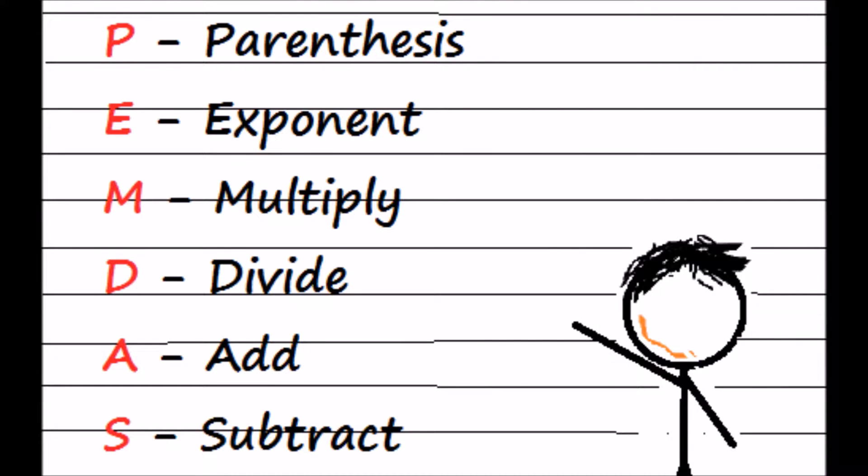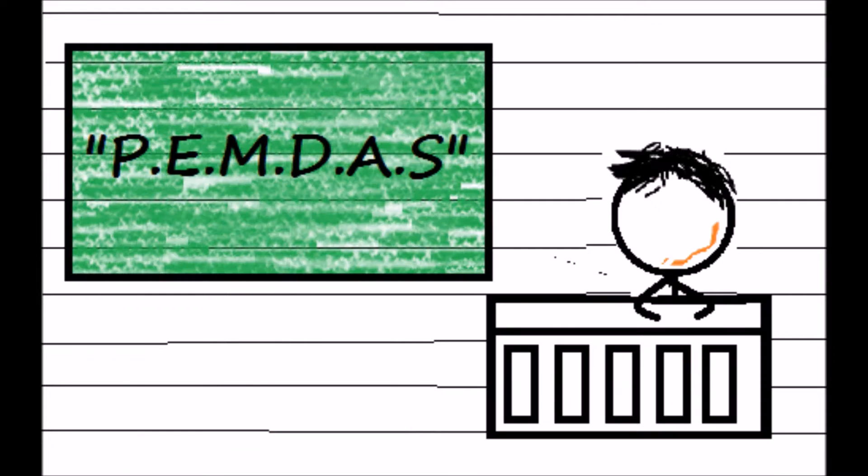Well, it turns out that this rule can be simplified to the abbreviation PEMDES, which means parenthesis, exponent, multiply, divide, subtract, and add. Now this abbreviation represents the order that you should solve the equation.